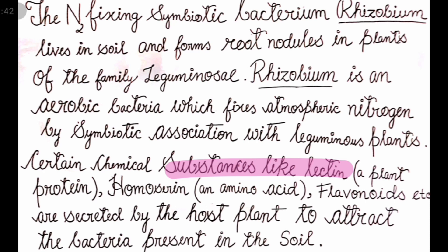The molecular weight of the attractant protein is 50–120 kilodaltons, which actually attracts bacteria to the root. A sugar-binding protein called Lectin is present in the root. Then there is Homoserine, which is a very rare amino acid found only in species of Rhizobium leguminosarum, and it also attracts the bacteria.